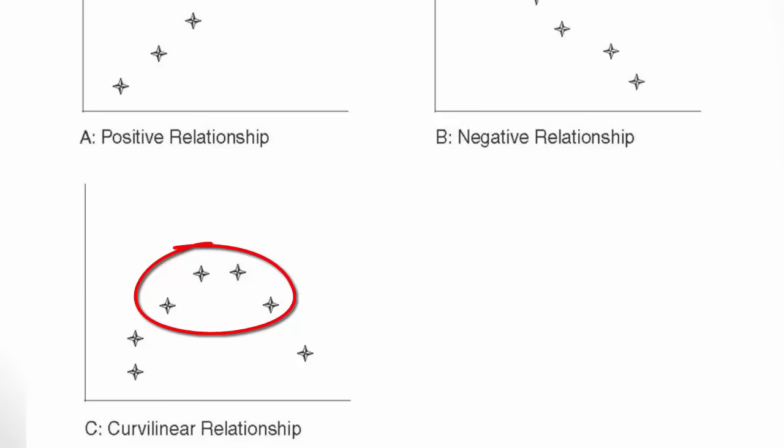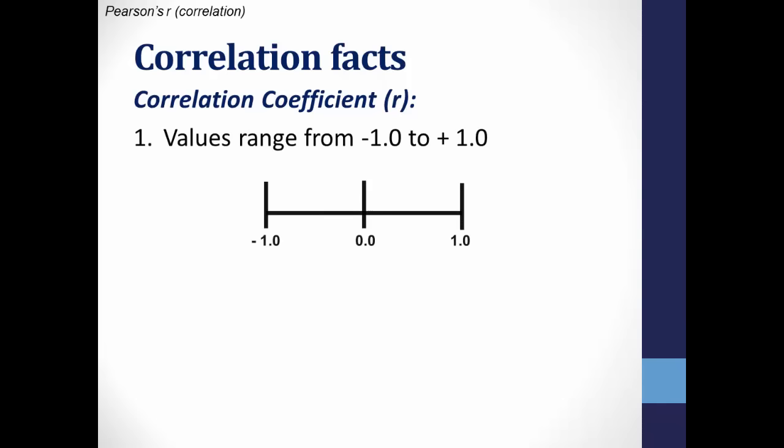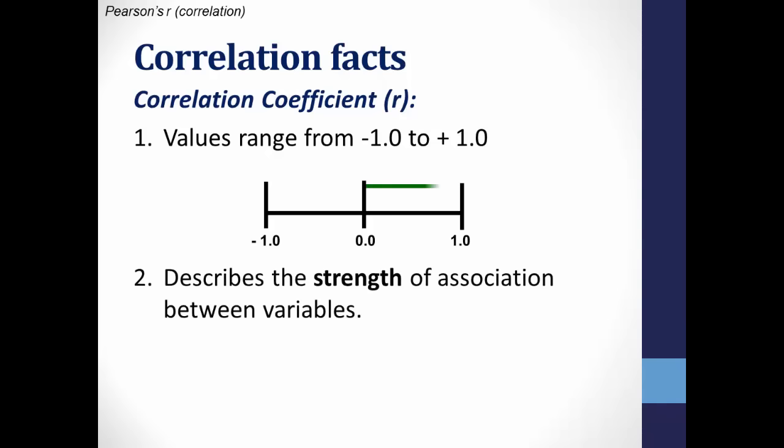And of course there could be no relationship between the two variables. When you finish calculating Pearson's R, you'll end up with values ranging from negative 1 to positive 1. The value describes the strength of association between variables. The closer the Pearson's R statistic is to 1 — either negatively or positively — the stronger the relationship between the variables. The positive and negative signs tell you the direction of association.